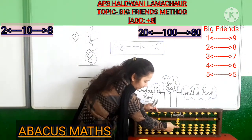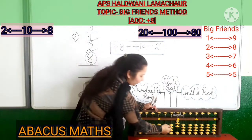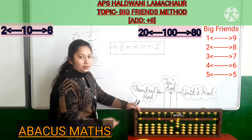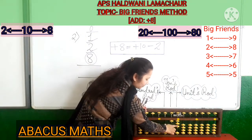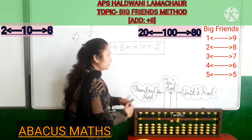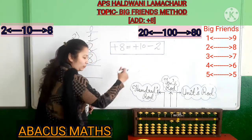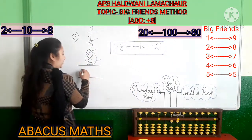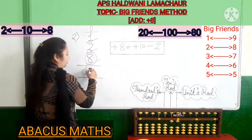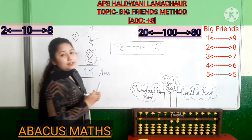Ten we will not add here in the 1s slot — ten in one slot up, meaning in the 10s rod. And minus 2 from the same 1s slot. So 8 is added. Now count: 1 in the 10s slot, and 1 in the 1s slot. And 11 is your answer.